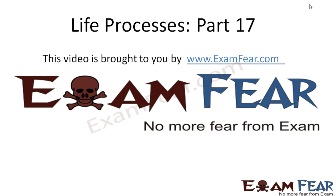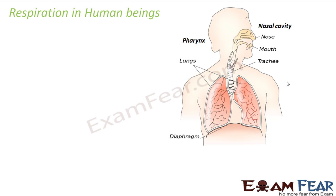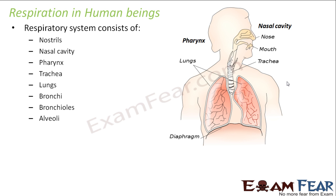Hello friends, this video on Life Processes Part 17 is brought to you by examfear.com. We are going to talk about respiration in human beings and how we respire. The respiratory system consists of so many things: it starts with our nostrils, the nasal cavity, pharynx, trachea, lungs, bronchi, bronchioles, and alveoli. So many things together constitute the respiratory system in human beings, and we will talk about each of these parts in detail one by one.